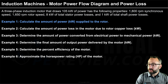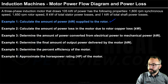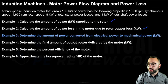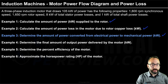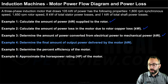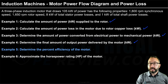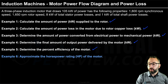The first example is to calculate the total amount of power in kilowatts supplied to the rotor. The second is to calculate the total power loss due to rotor copper losses. The third is to determine the power converted from electrical to mechanical in kilowatts. The fourth is the final output power. The fifth is the percent efficiency, and the sixth is to approximate the horsepower rating of the motor.